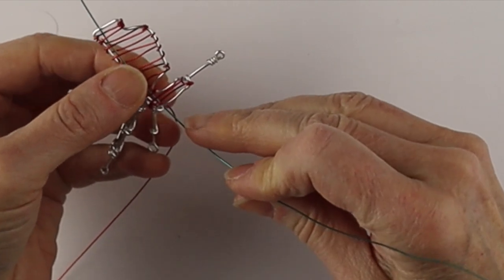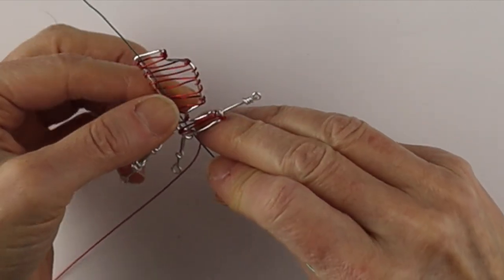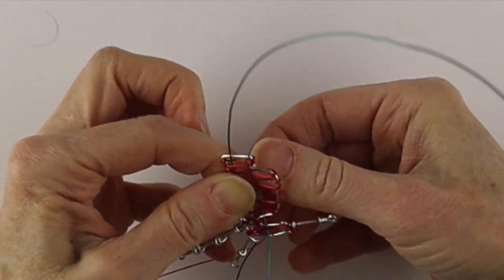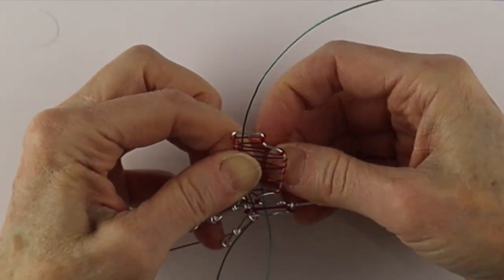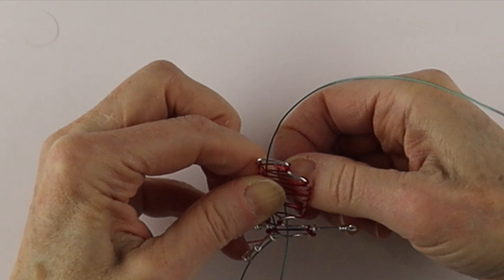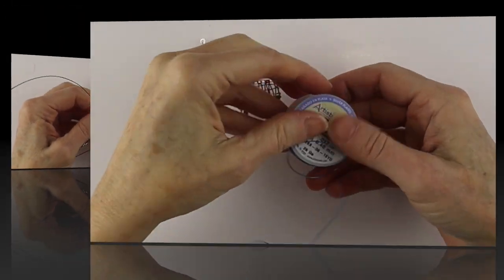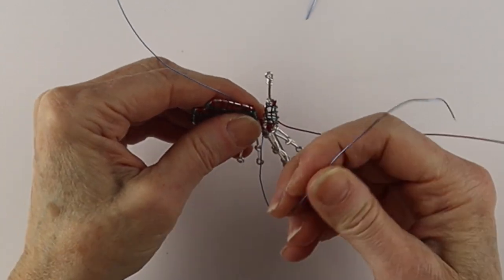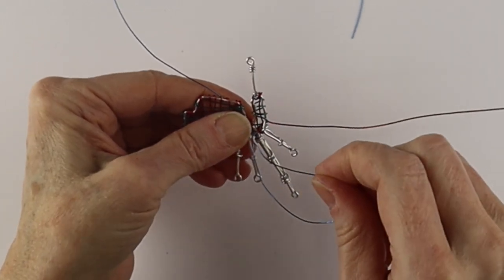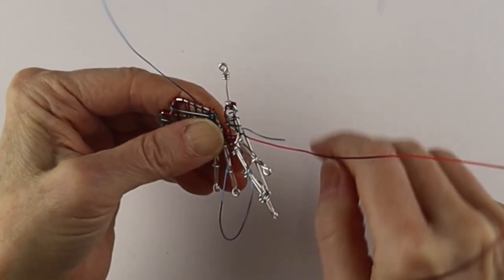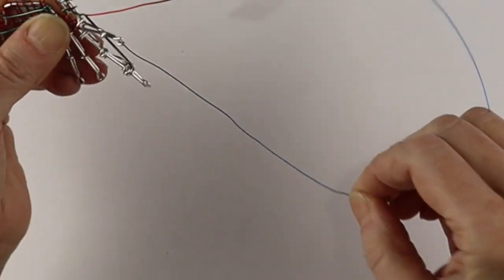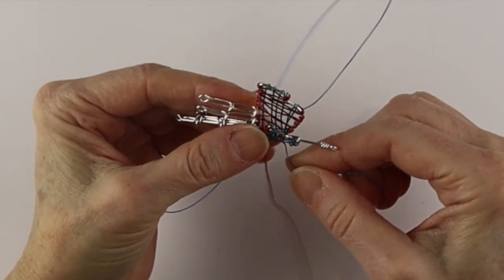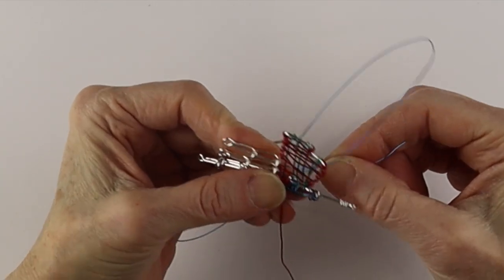Wind it back and forth pretty loosely because we're going to add some other colors too. You don't need a lot of wire, maybe about 12 to 15 inches. Then I'm going to get some blue and wind the blue wire in there. These colors are beautiful—this is artistic wire from Beadalon. I'll just keep adding them till I'm happy with it.